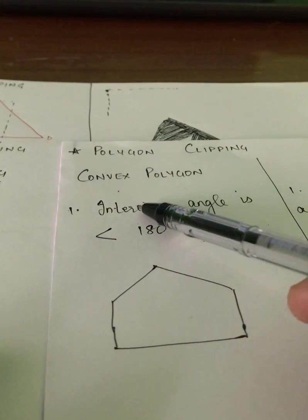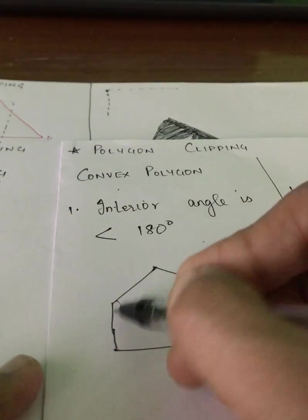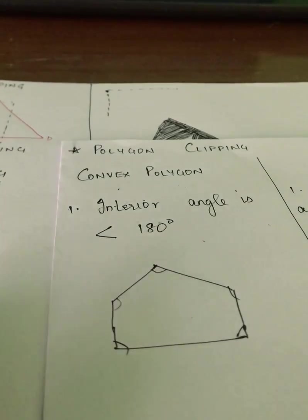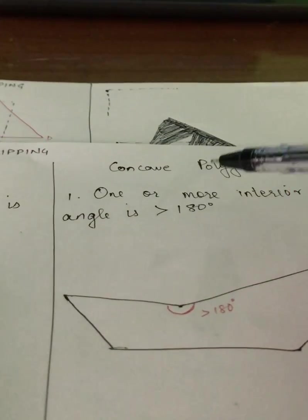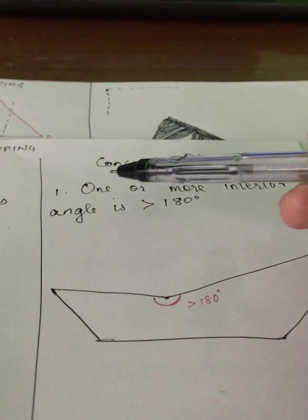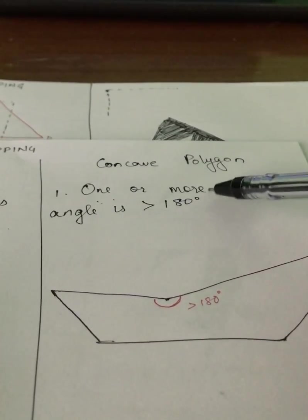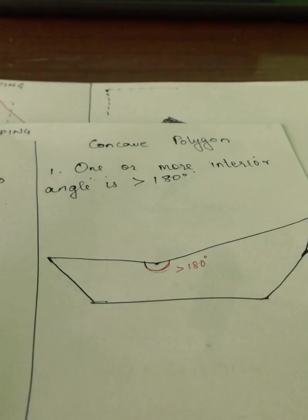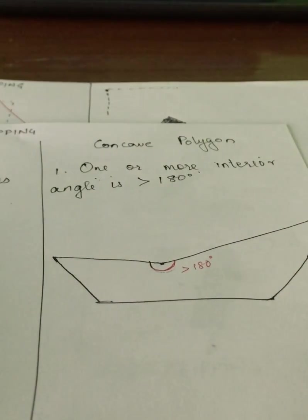This polygon, for example, has all the interior angles as less than 180. Whereas a concave polygon is a polygon which will have at least one angle which is greater than 180. This right here, for example, is greater than 180, so that makes it a concave polygon.